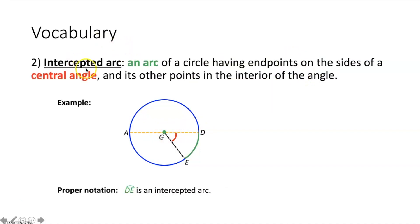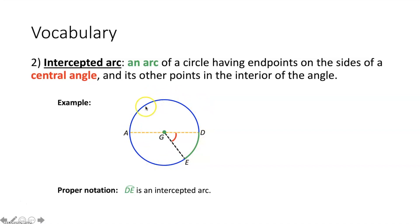Next, let's talk about an intercepted arc. That would be an arc of a circle having endpoints on the sides of a central angle and its other points in the interior of the angle. So again, let's check out our example to see what this looks like. We once again have circle G.